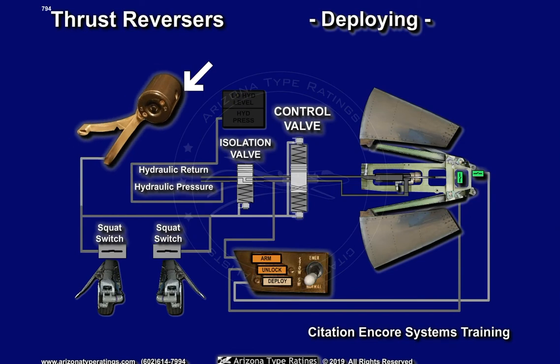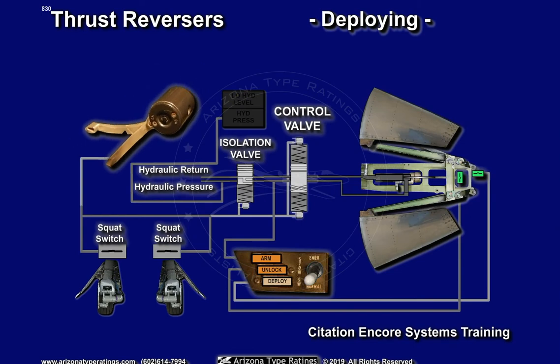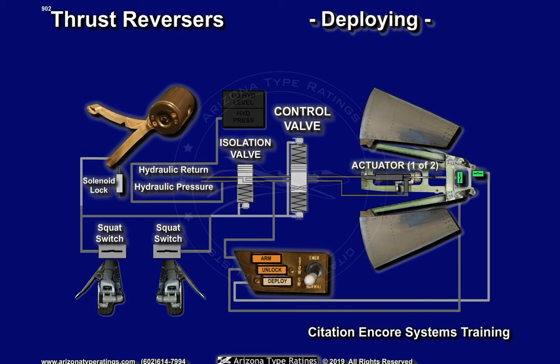With the thrust levers in the flight idle position, the system is activated by moving the thrust reverse levers to the reverse idle position. At this point, a solenoid lock is activated to prevent engine spool up until the reverser doors are fully deployed.